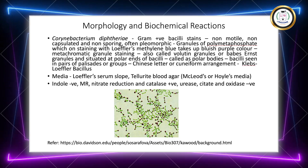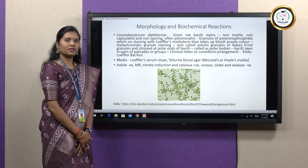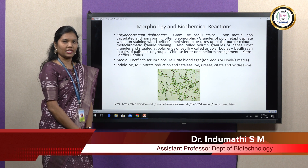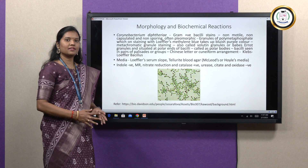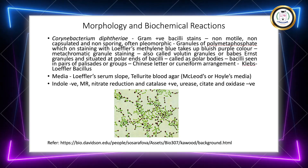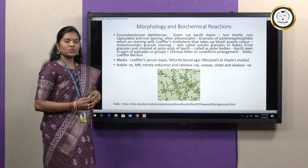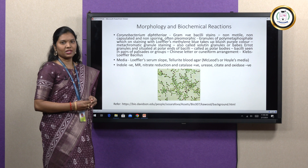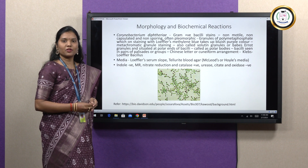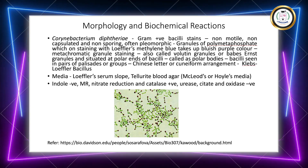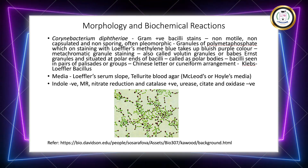Firstly, we will look into the morphology and cultural characteristics of Corynebacterium diphtheriae. Diphtheria is basically caused by a gram-positive bacilli called Corynebacterium diphtheriae. It is non-motile, non-capsulated and non-sporing. This particular bacilli has special types of granules called Volutin granules or Ernst-Babes granules, made up of polymetaphosphate, which on staining with Loeffler's methylene blue stain takes up a bluish-purple color. This type of staining is called metachromatic granule staining. These granules are present on the polar ends of the bacilli, so they are also called polar bodies.